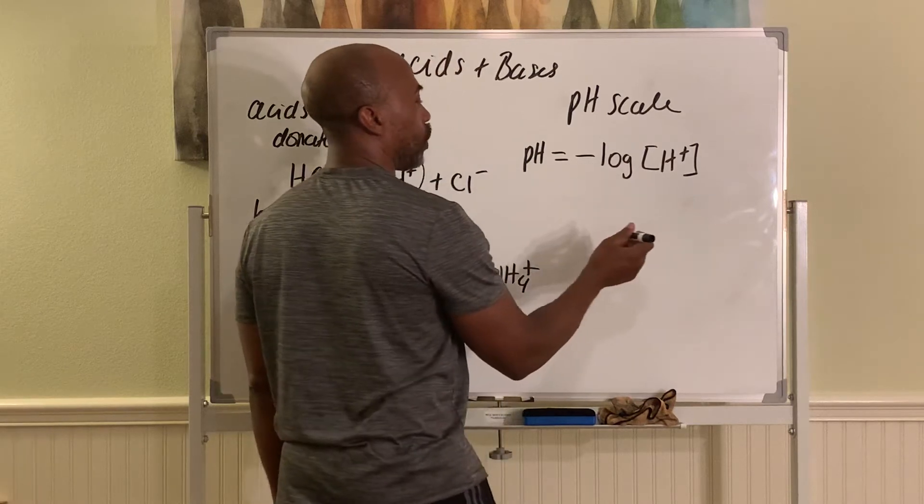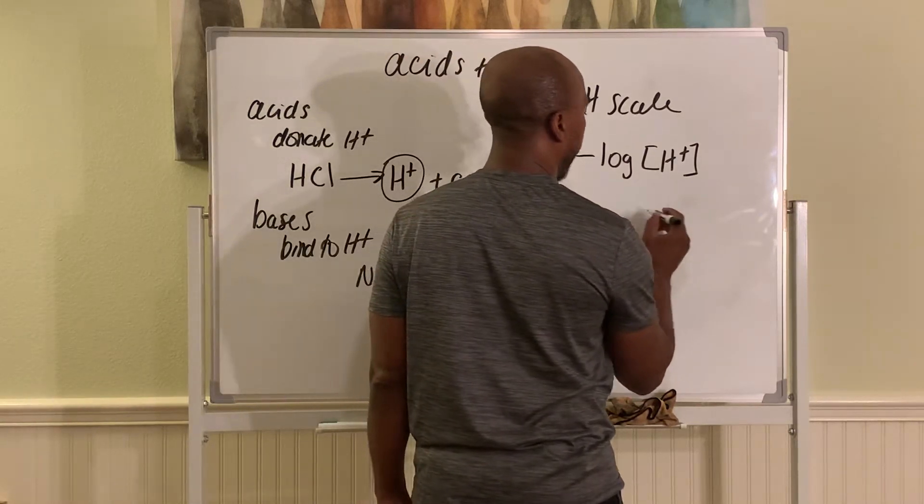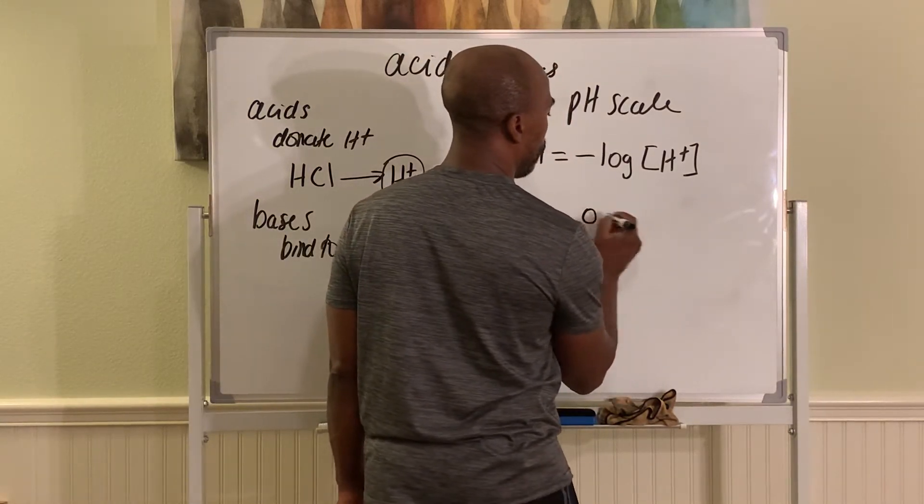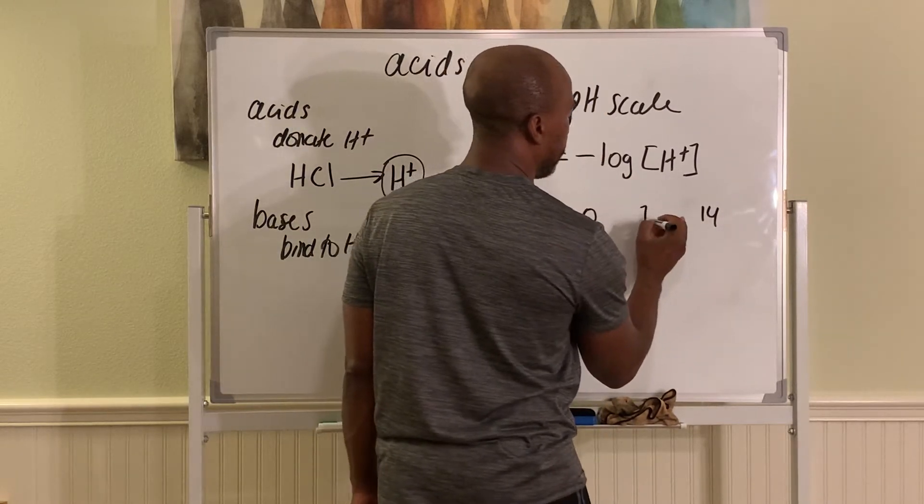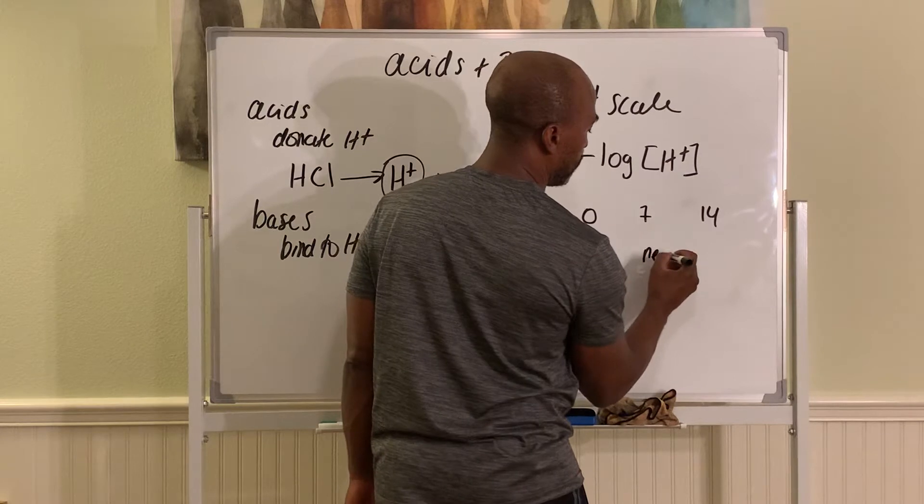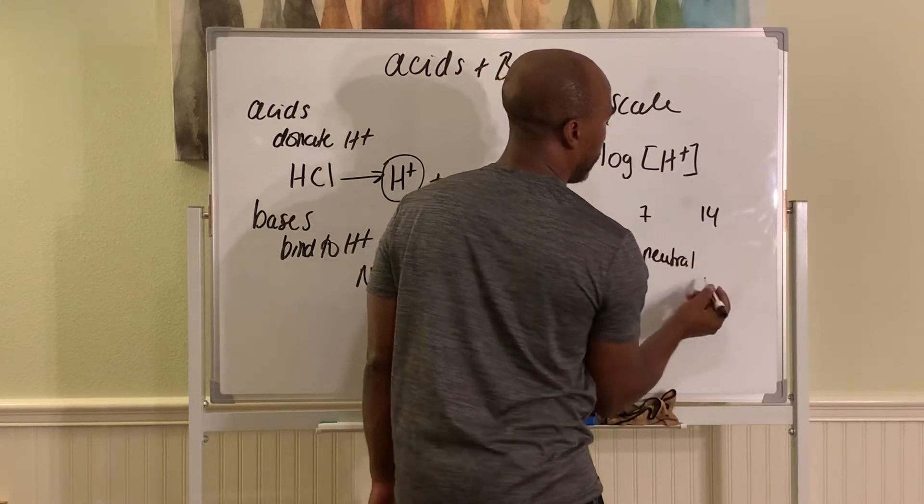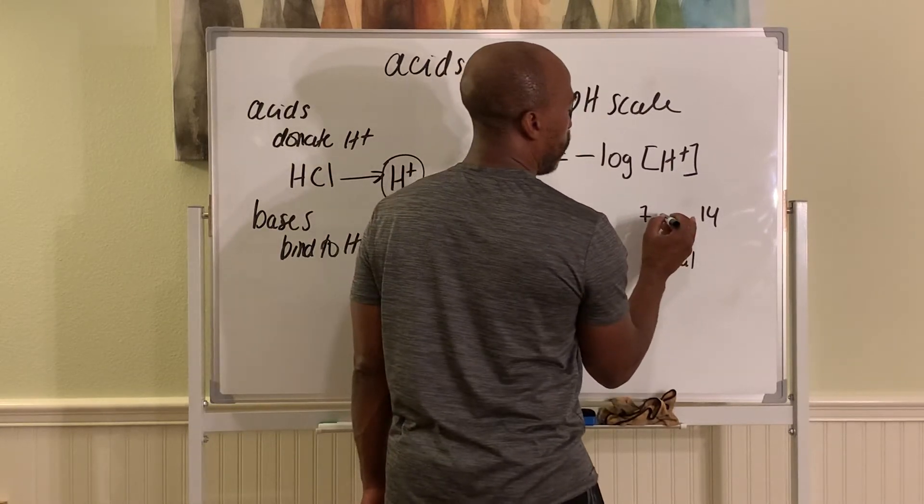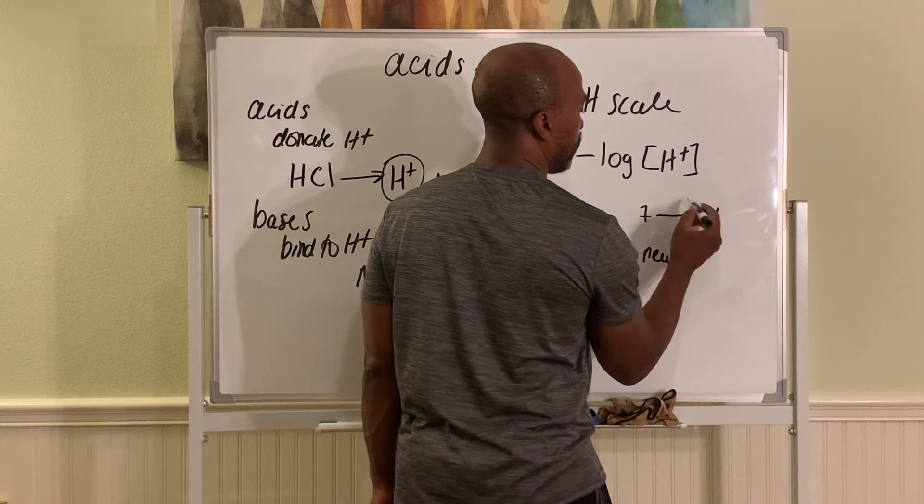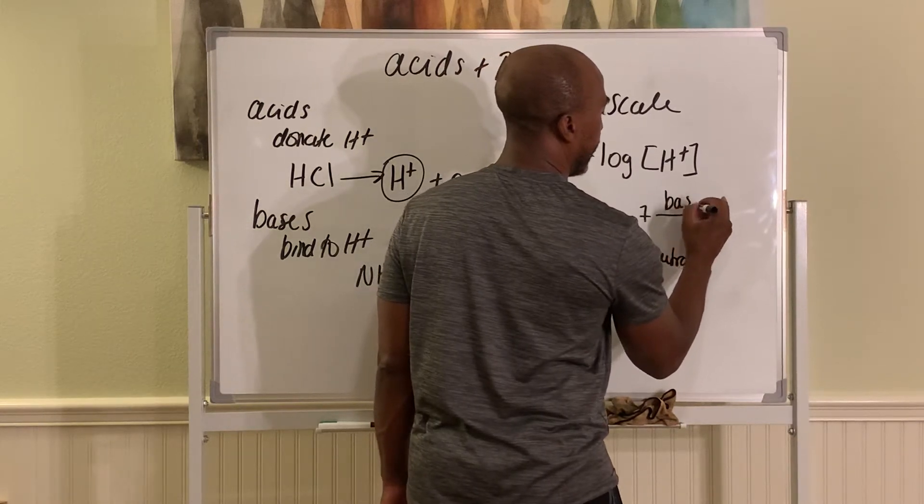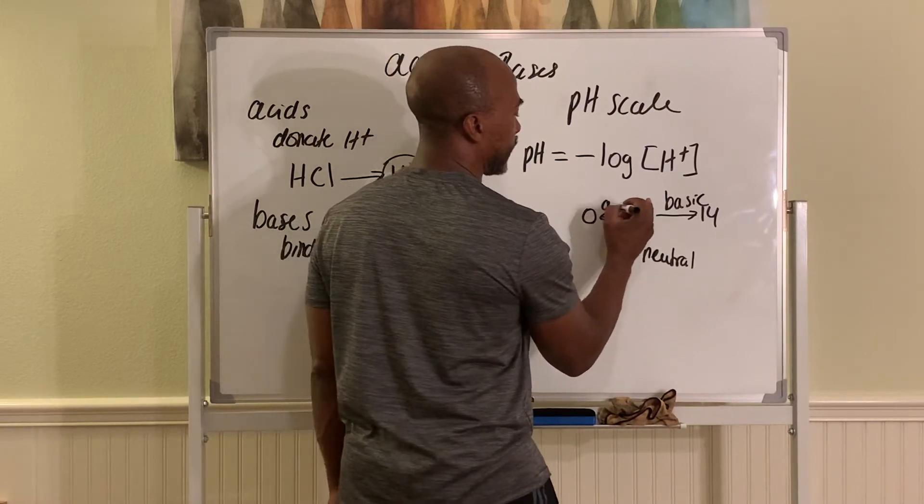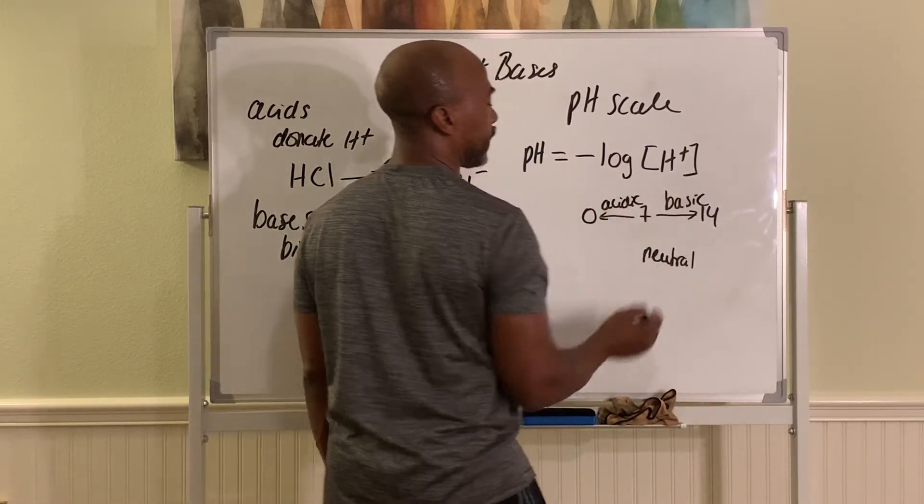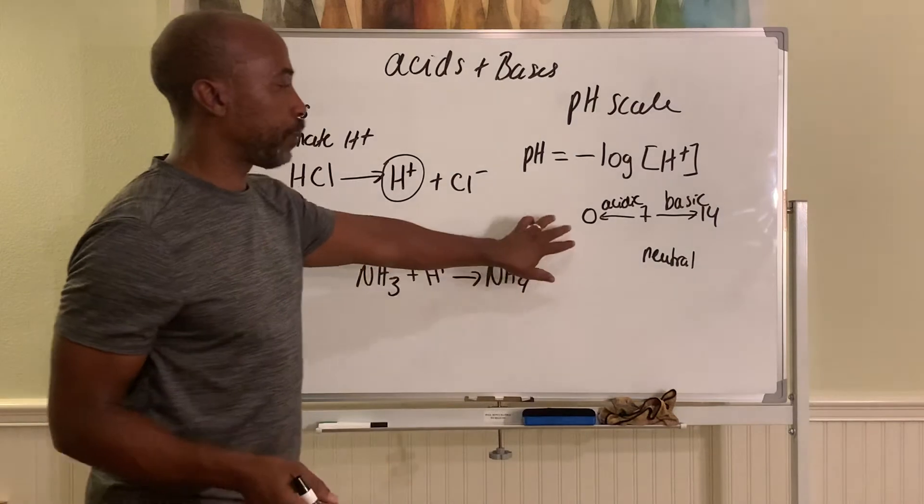And typically in the body, the range goes from 0 to 14. A pH of 7 is said to be neutral. As you go higher in number, you become more basic. As you go lower in number, you're more acidic. Zero is pretty acidic. Now, we tend to think that pH stops at 0 to 14. It does not.